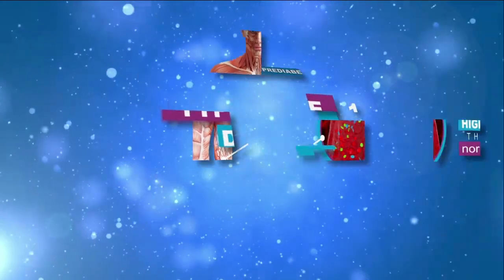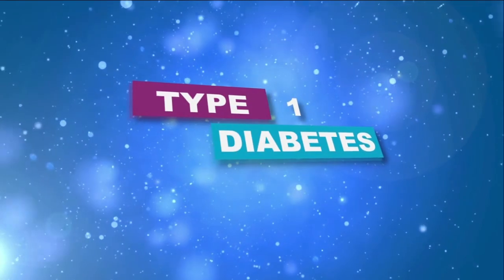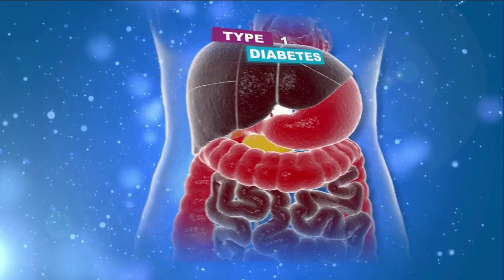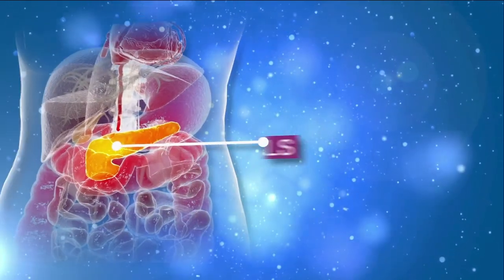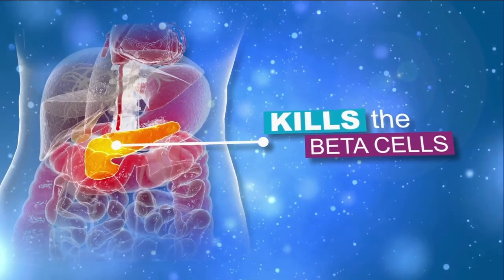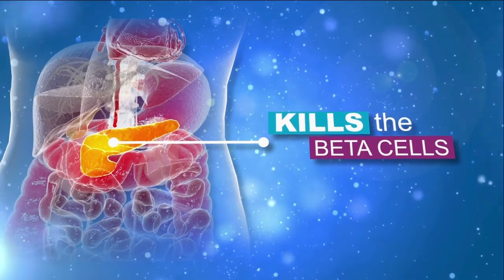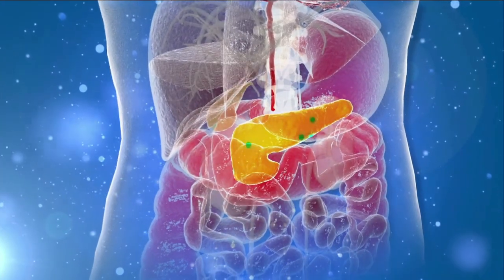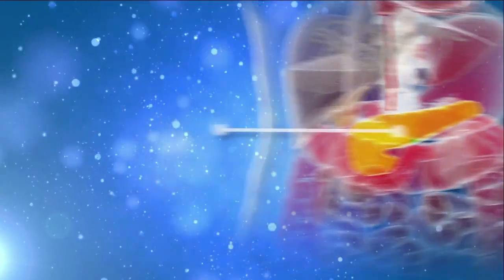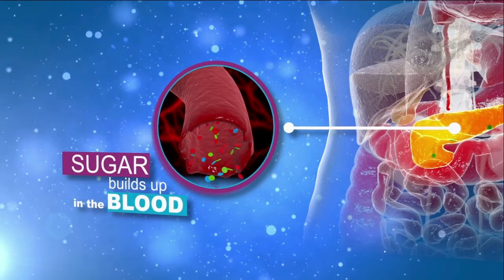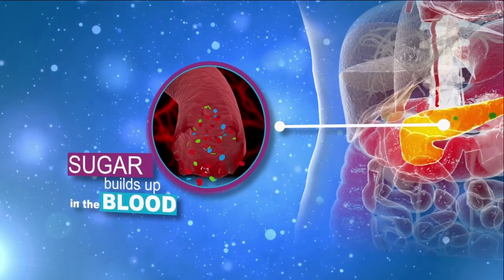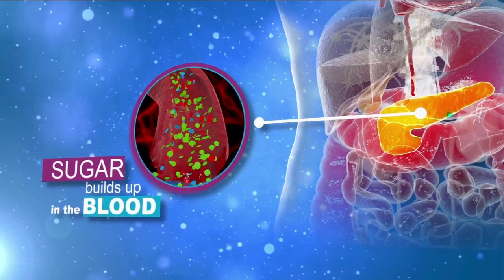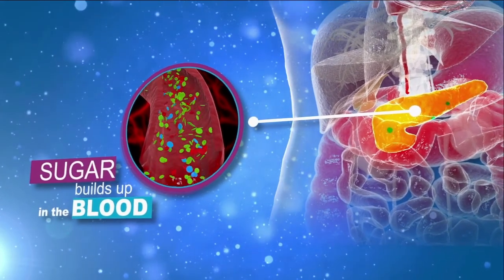In type 1 diabetes, our immune system mistakenly attacks and kills the beta cells of the pancreas, which results in very little secretion of insulin in the body. As a result, sugar builds up in the blood instead of being used as energy.